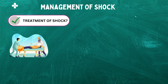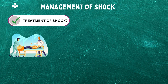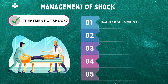Now let's understand the primary management of shock. The management of shock in the emergency department depends on the cause and severity of the condition. However, there are some general steps that can be taken. Step 1 is rapid assessment: the first step in managing shock is to rapidly assess the patient's vital signs and identify any underlying causes of the condition.